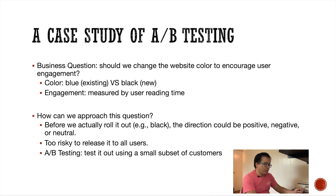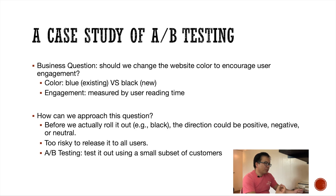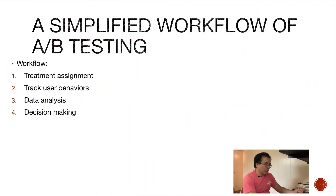A more reasonable approach is A/B testing using only a small subset of users. If the new design has a slightly negative effect, we can rely on our pipeline and reporting system to detect the decrease early and end the experiment. There is still risk in testing, but the risk can be quantified and drastically reduced if we use proper statistical methods.